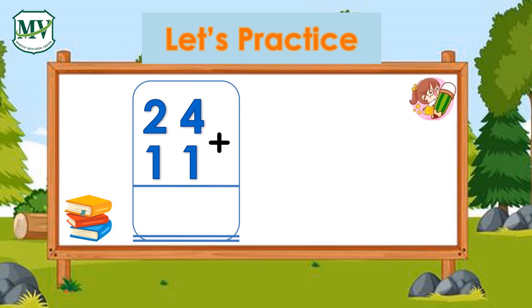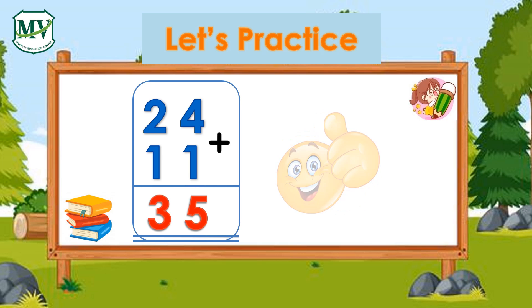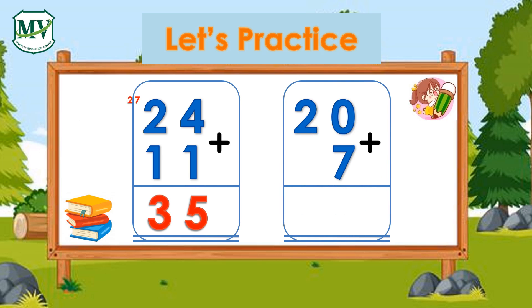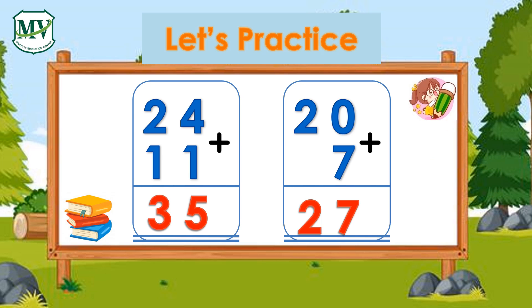24 plus 11 equals 35. Correct! Last one: 20 plus 7 equals 27. You got it right! Well done, kids — you did a great job! See you next time!